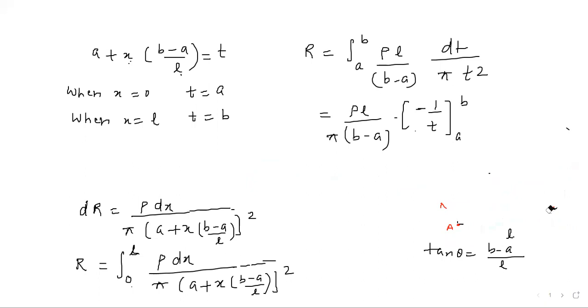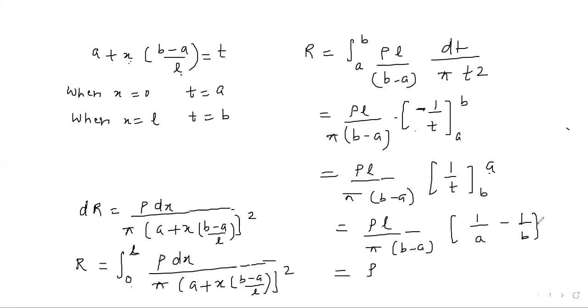Now, further we simplify and put the limits. We can change the limits to avoid the negative sign. ρl upon π b minus a times 1 upon t, limits b to a. Further simplifying, ρl upon π b minus a times b minus a upon ab. b minus a will cancel out. Finally, we will get R equal to ρl upon πab, which is the required resistance. Thank you for watching.